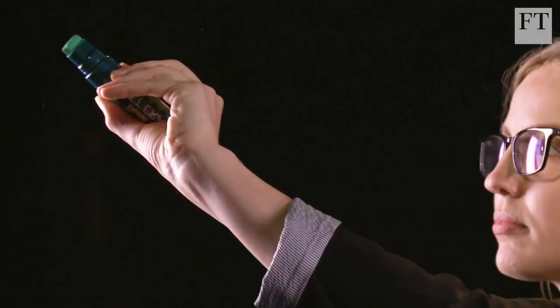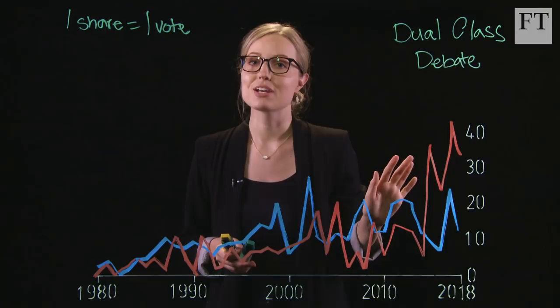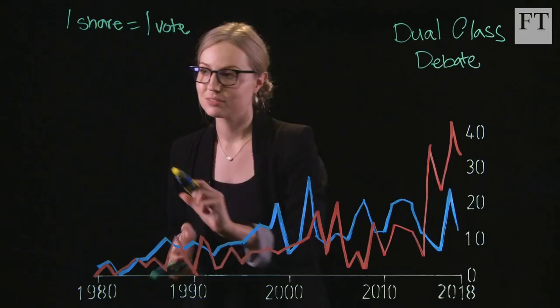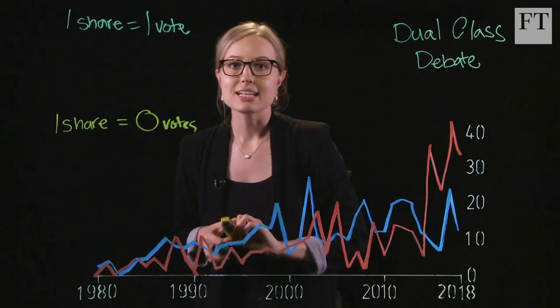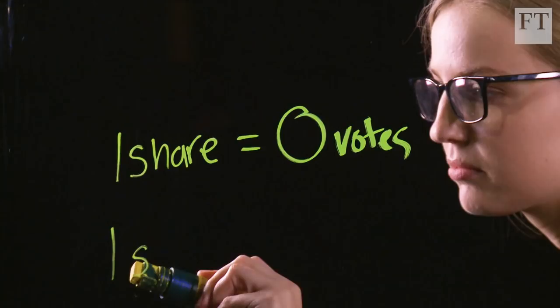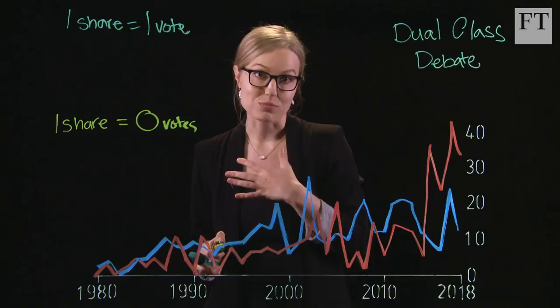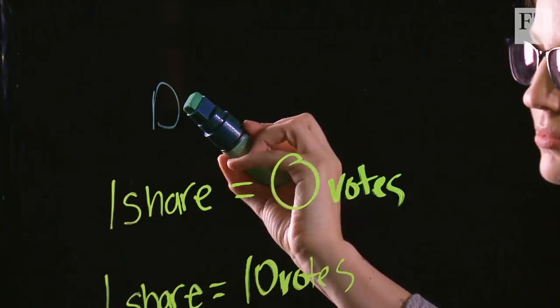Now, sometimes company management will say, actually, we don't want investors to have the ability to kick us out. So what we're gonna do is create these shares and sell them to investors, but they're not gonna have any voting power. And instead, they create a second class of shares which contain all the voting power, and management keeps that for themselves. And that's why we call it a dual class share system.